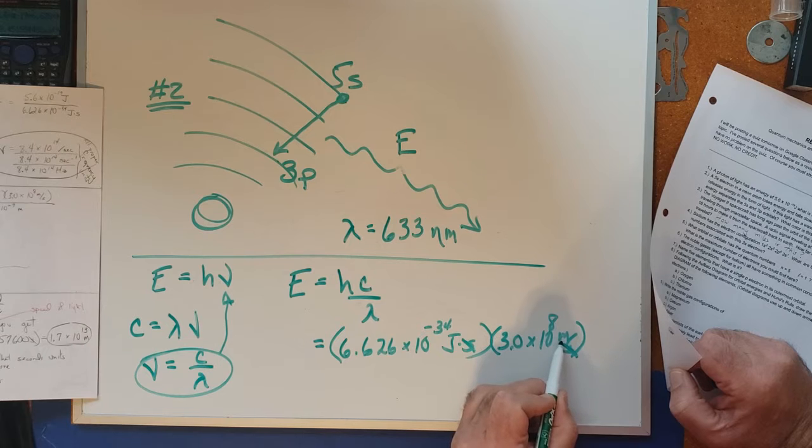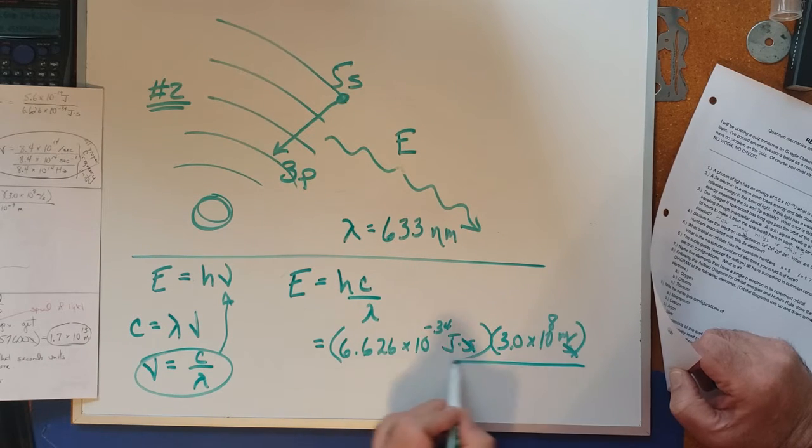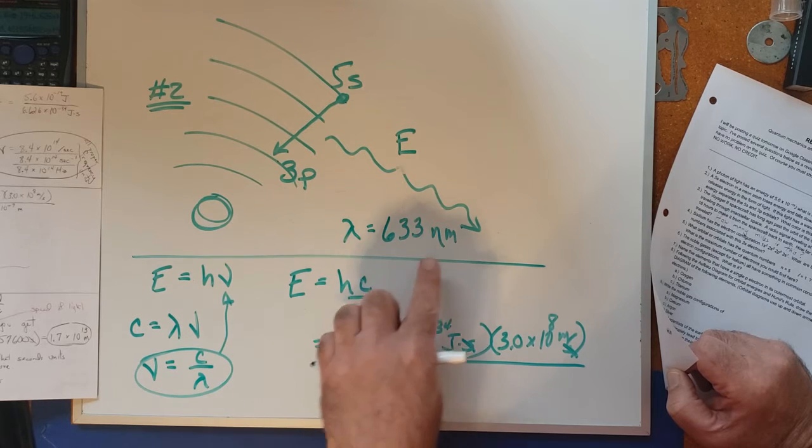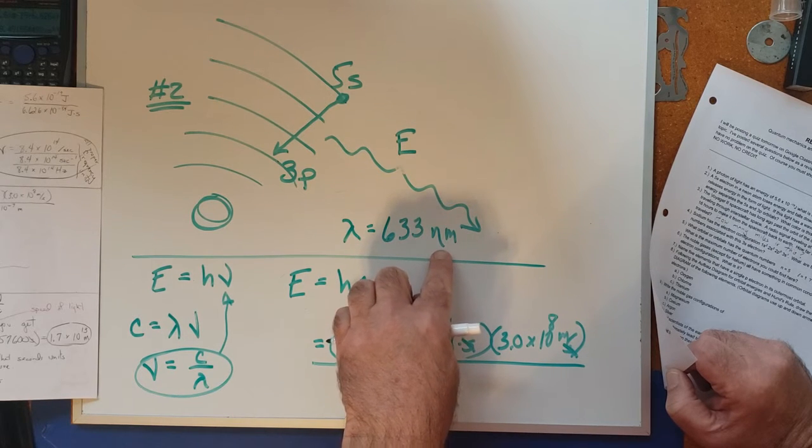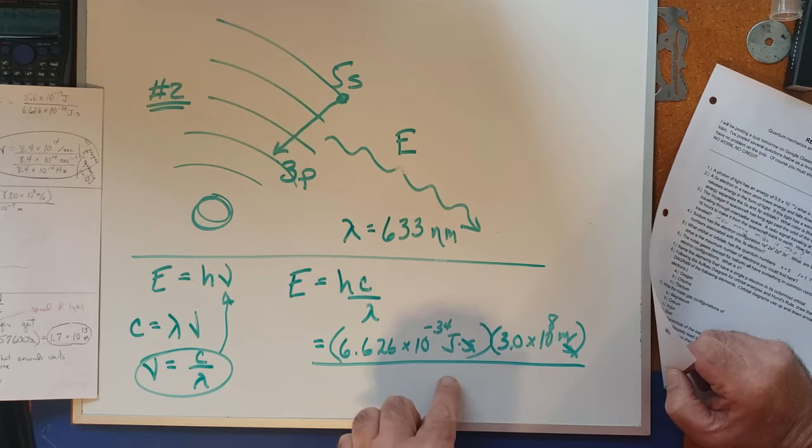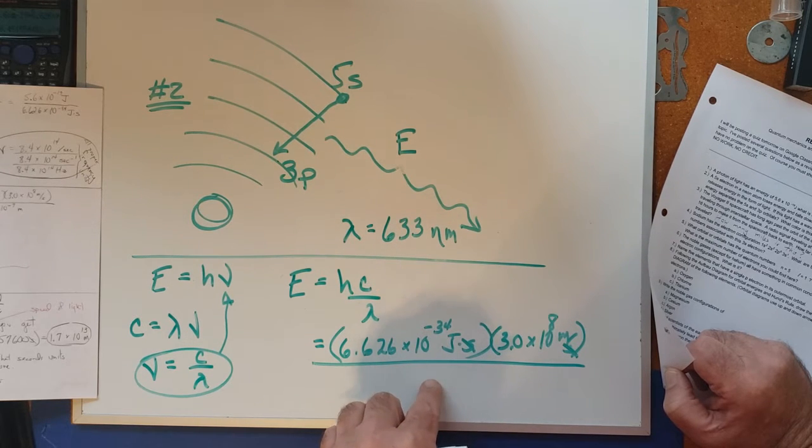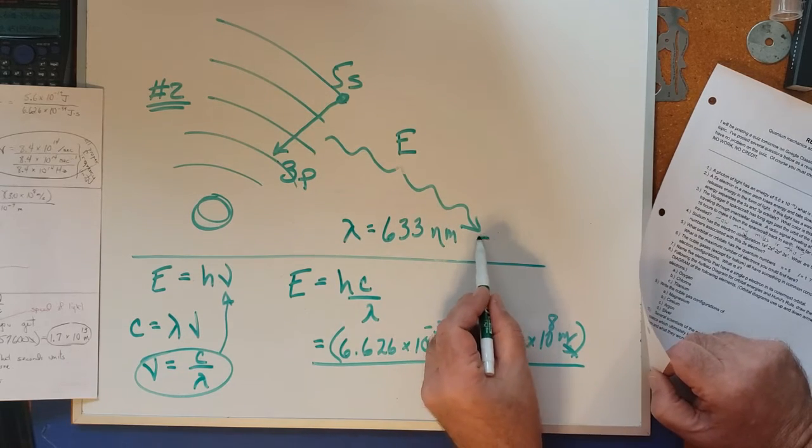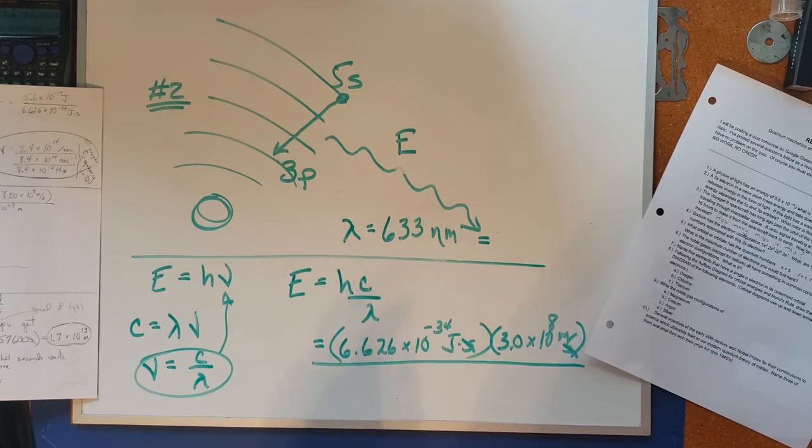Now we want just units of joules, which means we need to get rid of meters, which we'll do by utilizing the correct wavelength. Now the wavelength is given in nanometers. What we need to do is put the wavelength down here in the bottom, but change it to units of meters. So how do we go from nanometers to meters? We could use dimensional analysis to do that.